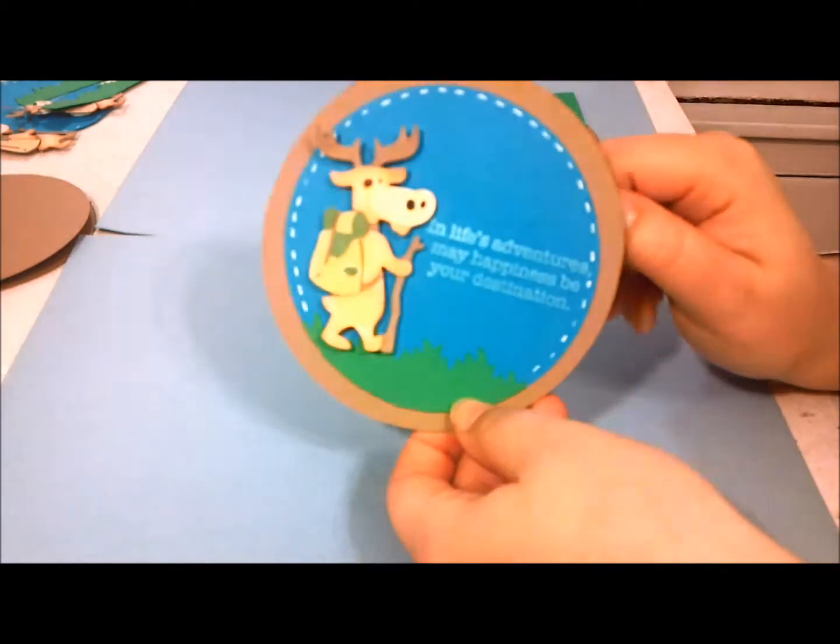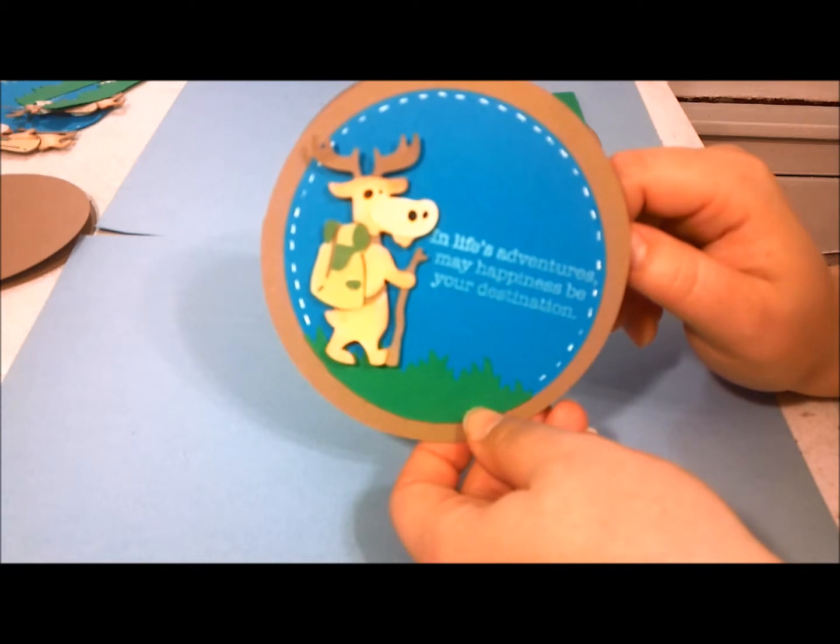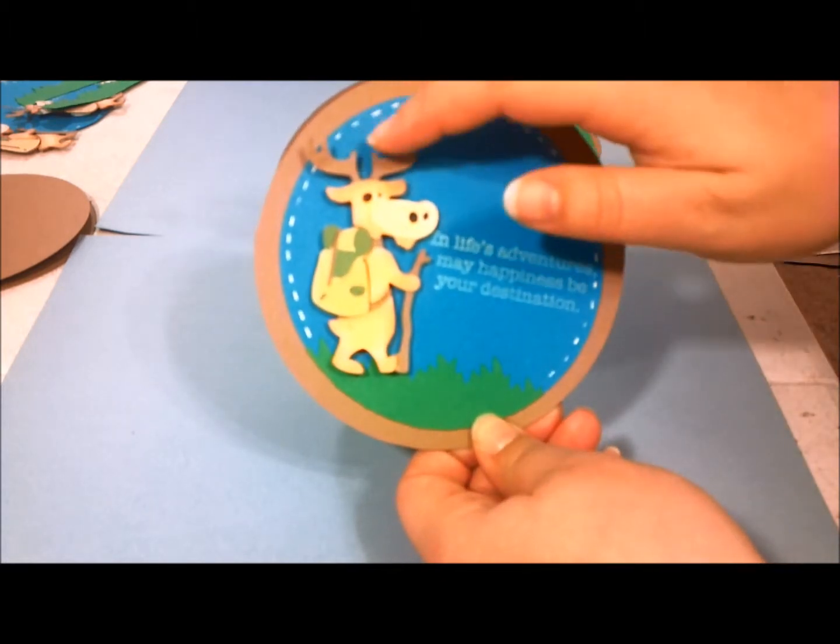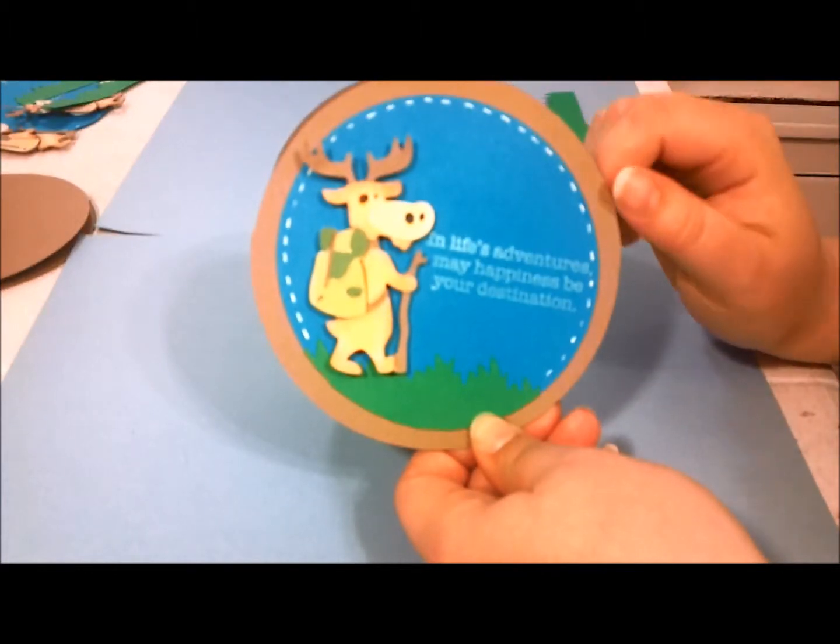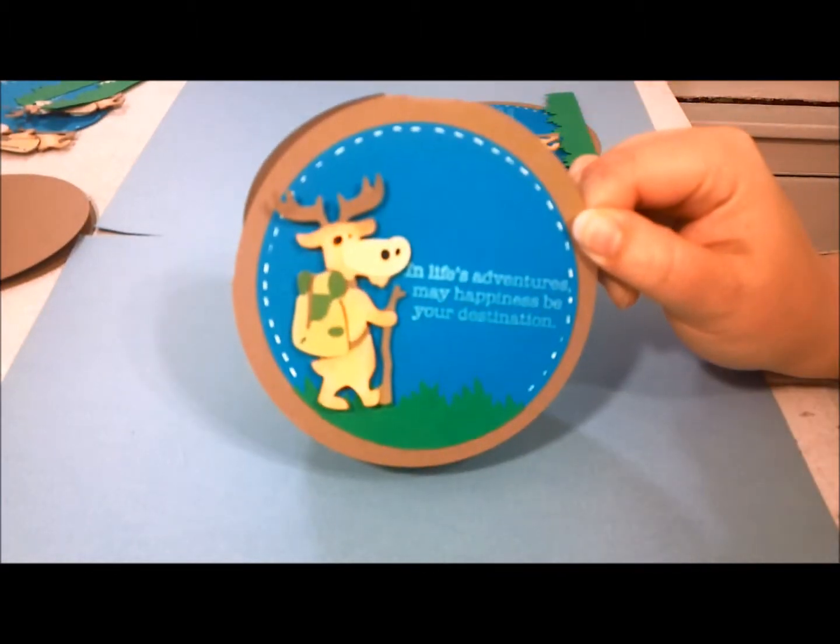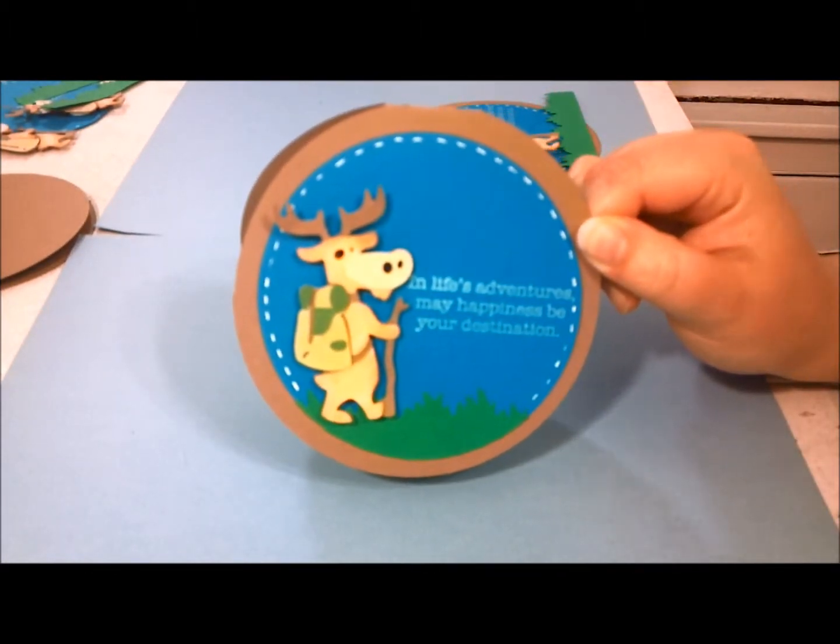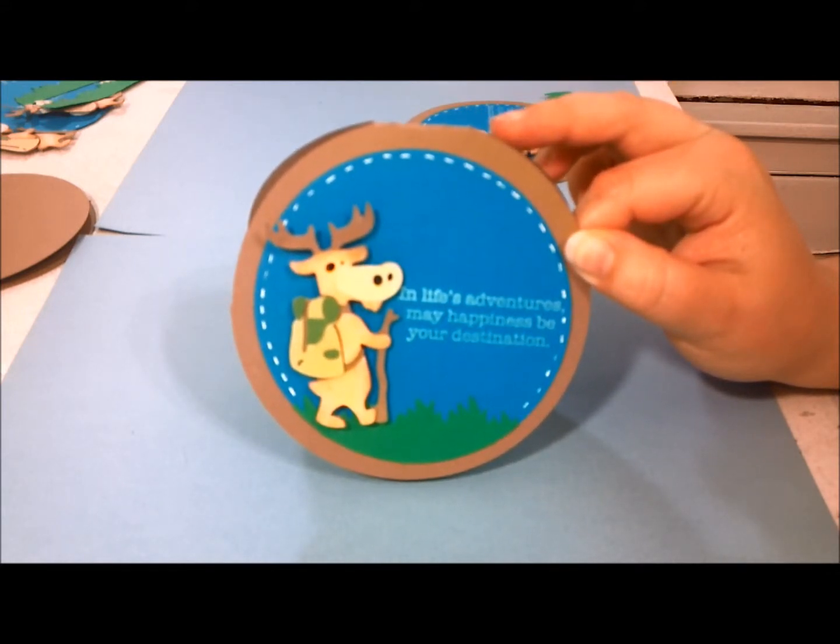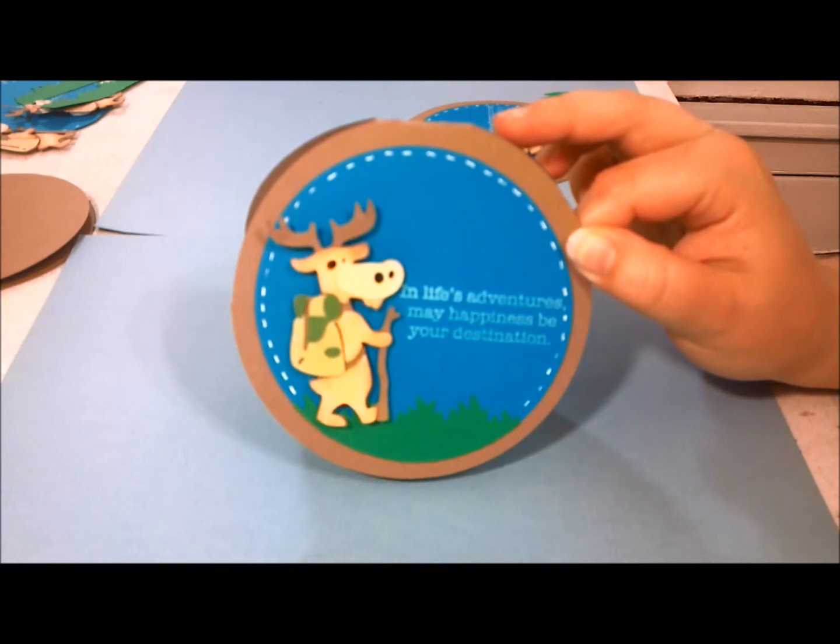The grass was cut at 1 inch and it's from Paper Doll Dress Up. The moose was cut at 3 inches and it was cut from Camping Critters. The card base was cut from Wild Cards and it was cut at 4 and a half inches.